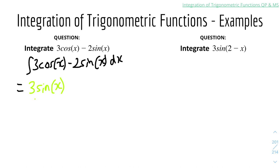For the second term, integrate minus 2sin x. Remember that when we integrate sin x you have to change the sign, so it becomes a plus. The constant stays the same, giving plus 2cos x. So the full answer is 3sin x + 2cos x + c, because it's an indefinite integral. To check: differentiate 2cos x and you get minus 2sin x, which is what we have.